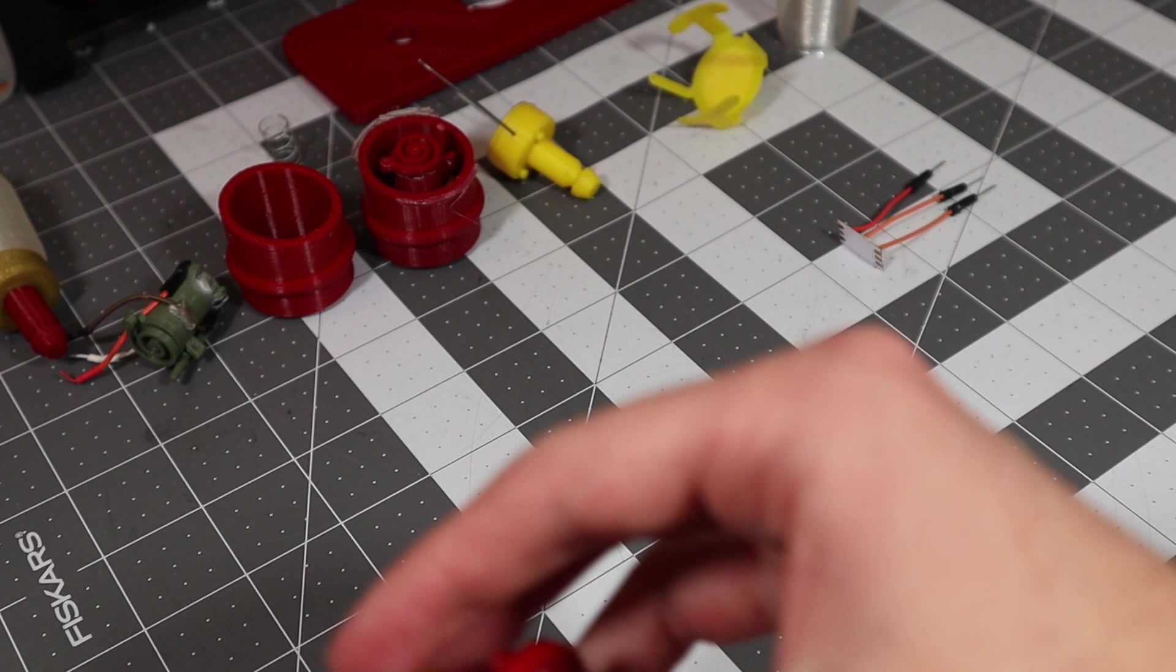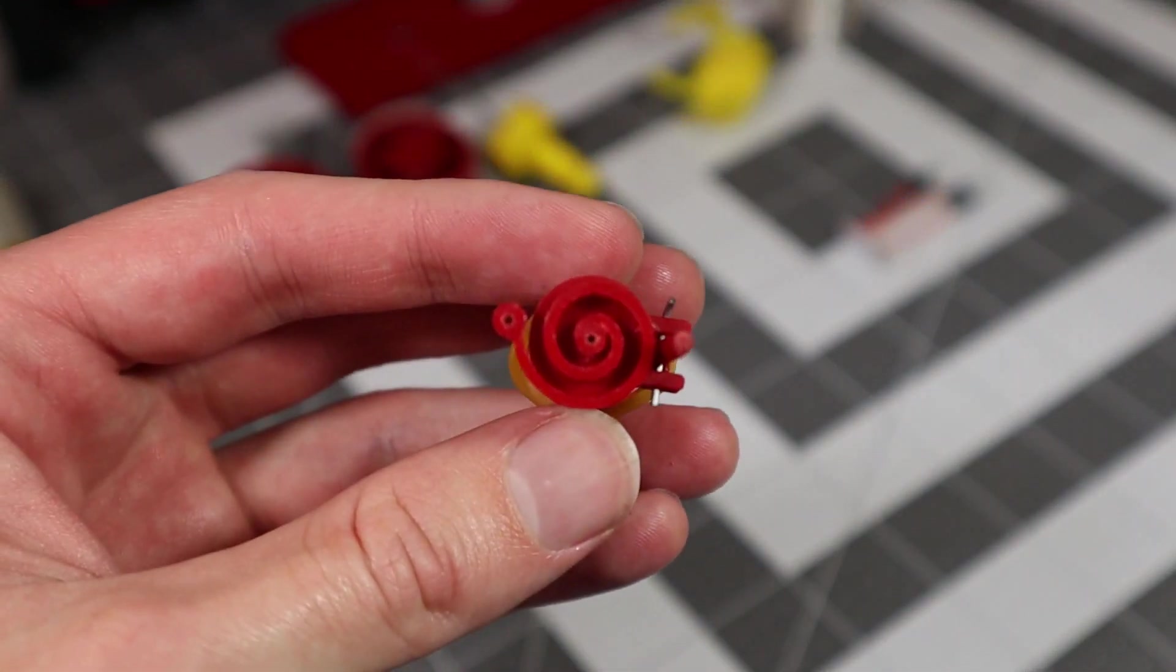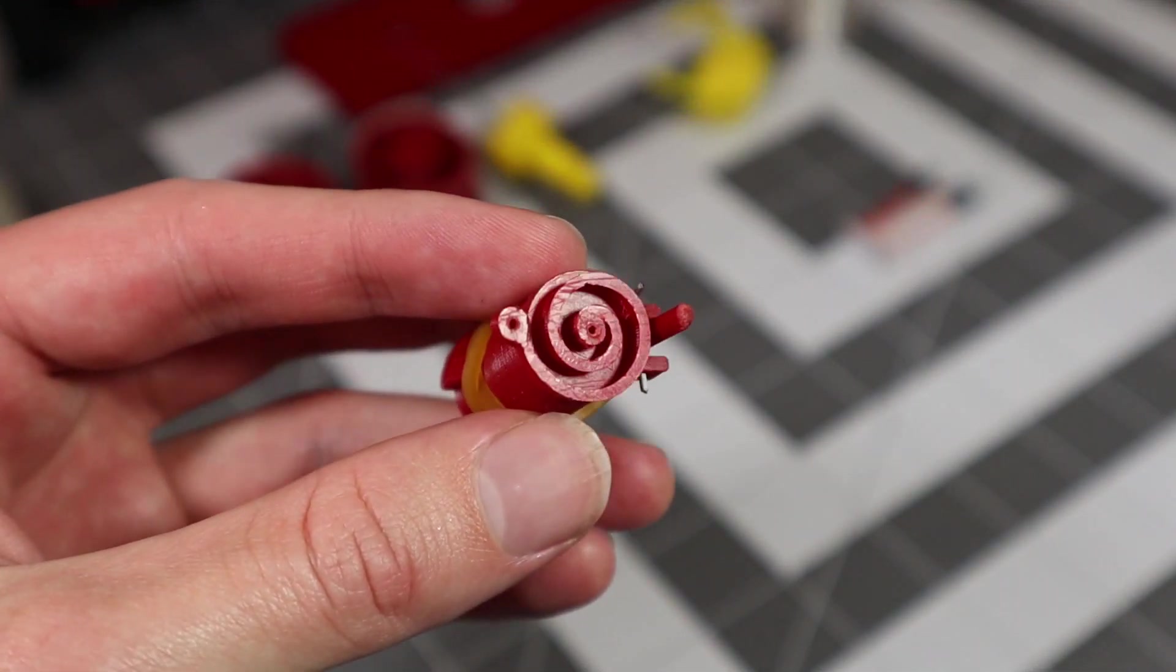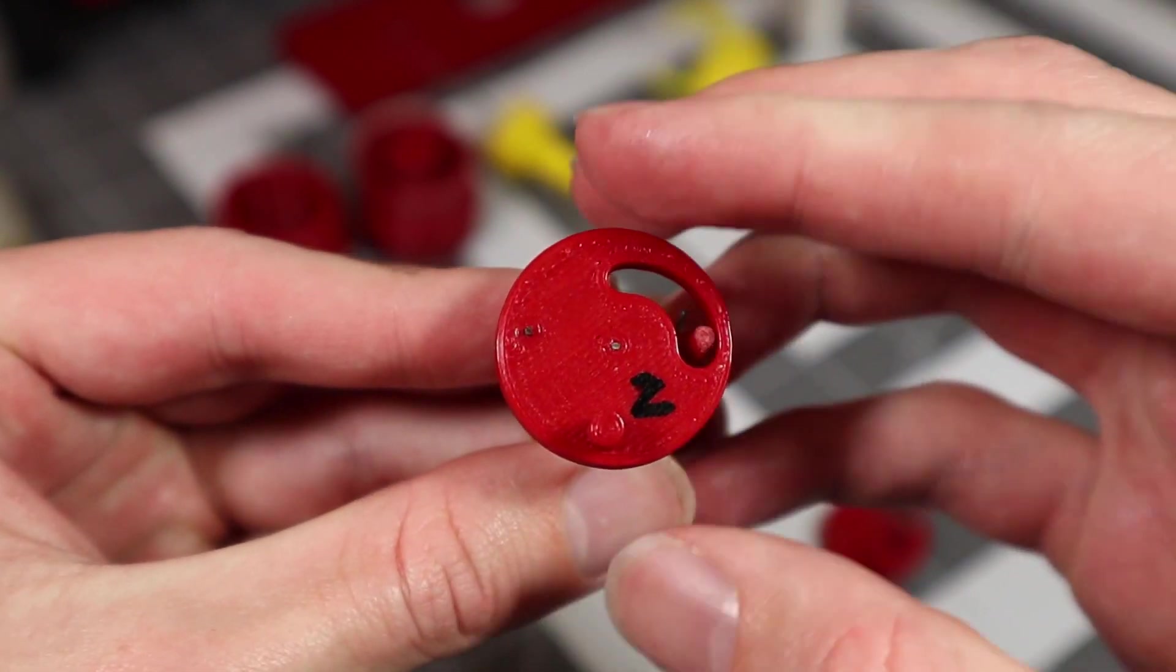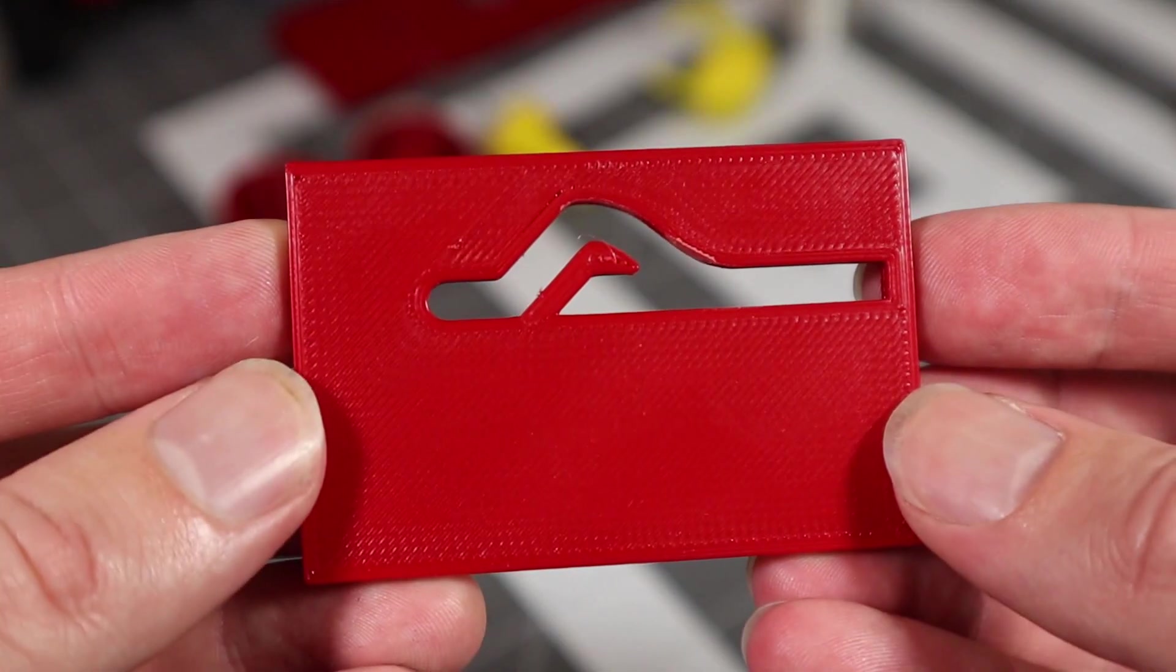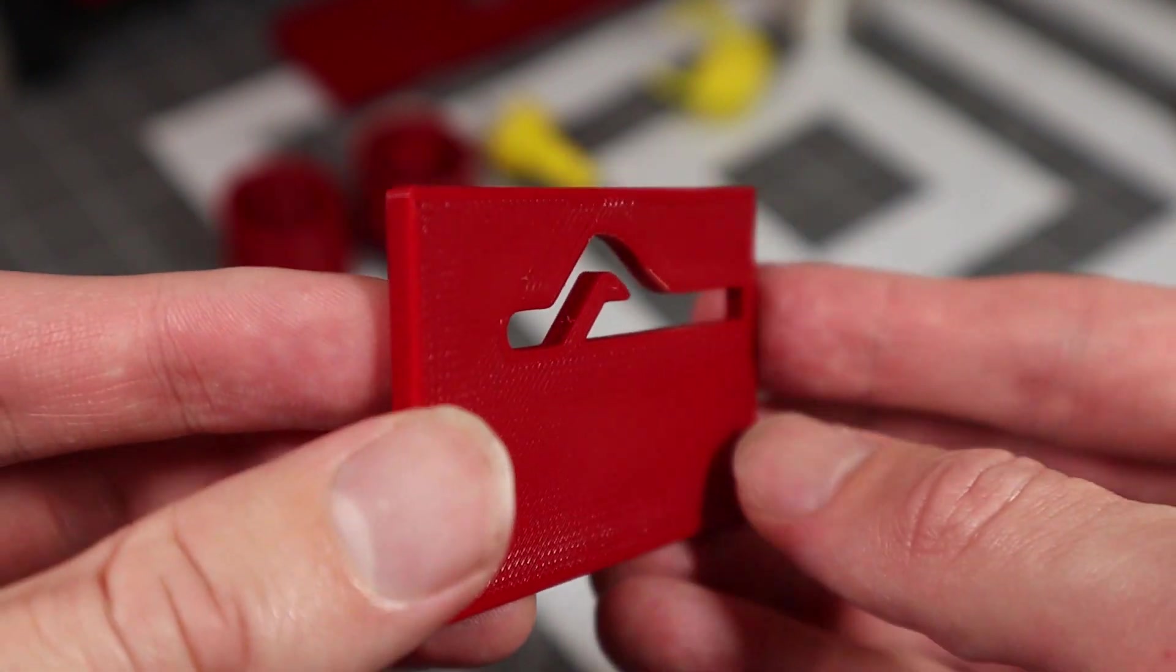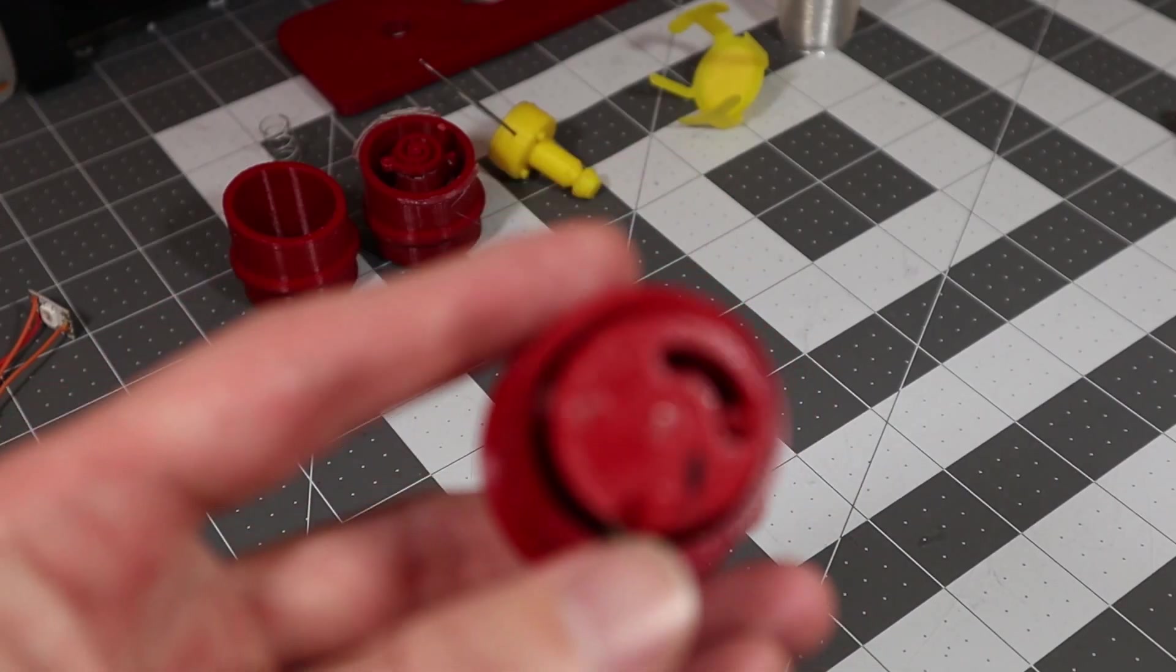We also need a way for the cam to return to its original position. For this, I 3D printed a torsion spring that pulls the cam back down once it's let go. With this design, we can make a sliding ramp that lifts the knob, rotates the cam, and launches the vacuum tubes.